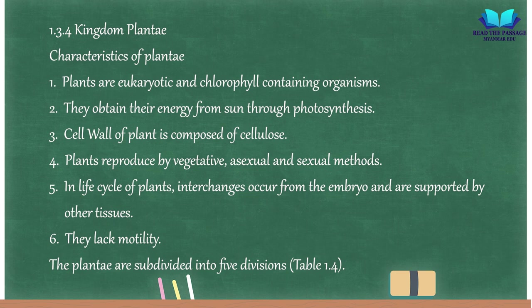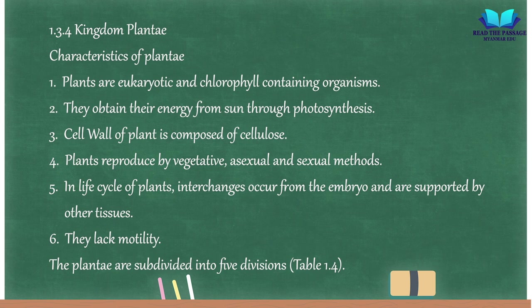1.3.4 Kingdom Plantae. Characteristics of Plantae: (1) Plants are eukaryotic and chlorophyll-containing organisms. (2) They obtain their energy from the sun through photosynthesis. (3) Cell wall of plants is composed of cellulose. (4) Plants reproduce by vegetative, asexual, and sexual methods. (5) In the life cycle of plants, interchanges occur from the embryo and are supported by other tissues. (6) They lack motility. The Plantae are subdivided into five divisions (Table 1.4).